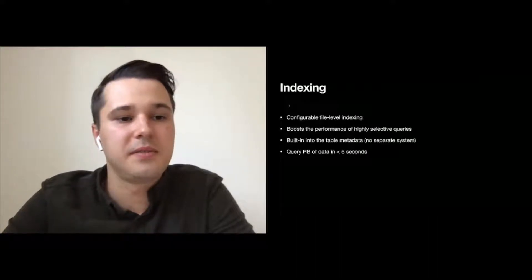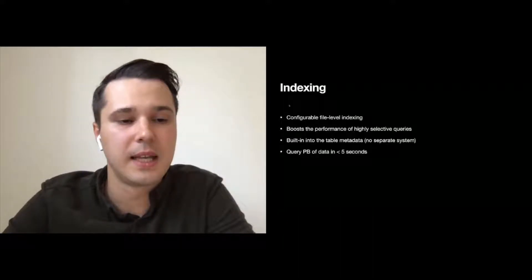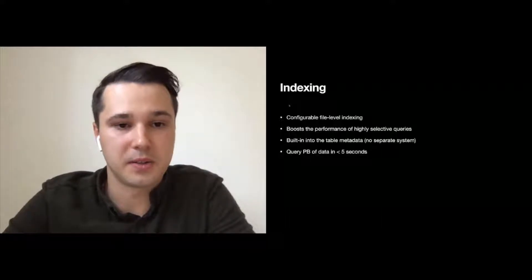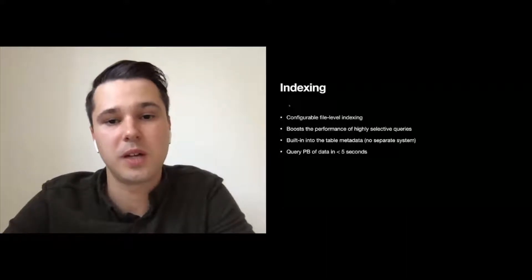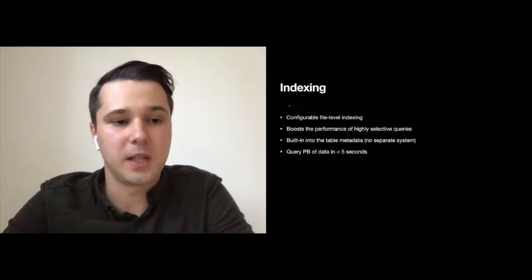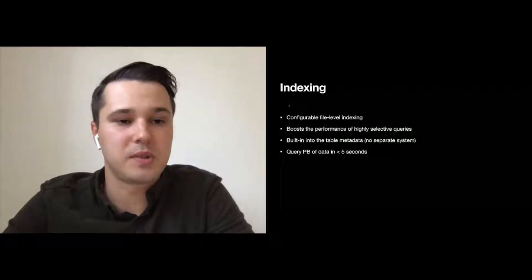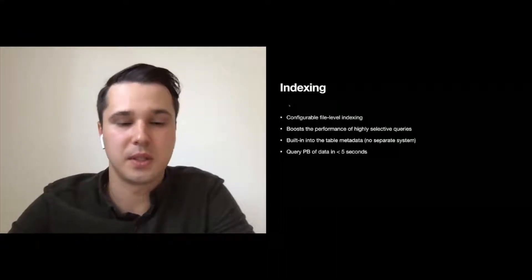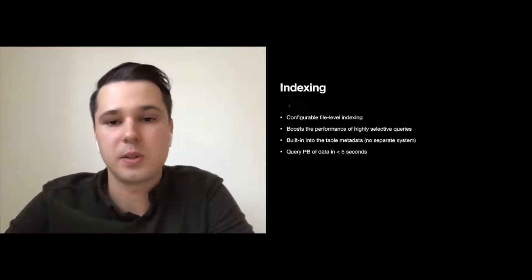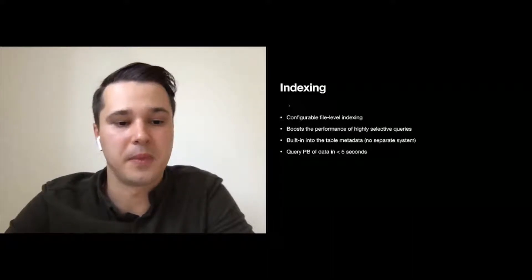The next feature is indexing. Iceberg brings the well-known idea of small materialized aggregates to the next level by keeping min-max statistics for your columns on the file level. This allows Iceberg to skip files without even touching them. For example, you no longer have to read the footer of a file to find out it doesn't match your query. This boosts performance for highly selective queries. The index is part of the metadata, so it's automatic — you don't have to run a separate system. All of that allows you to query petabyte-scale tables in five seconds if your query is selective enough.